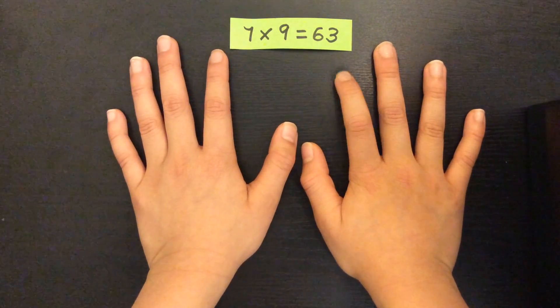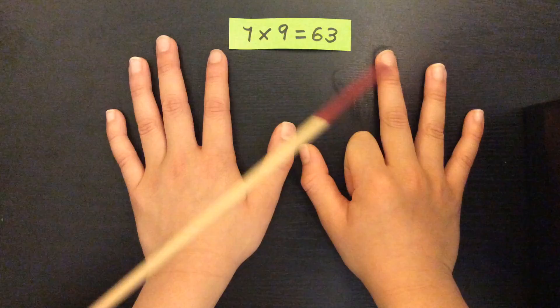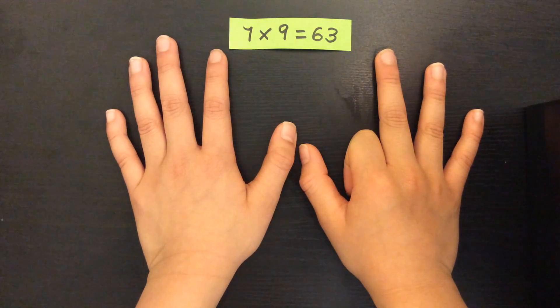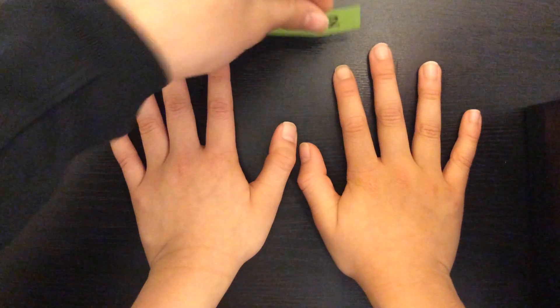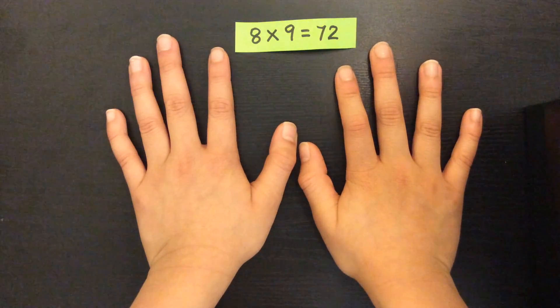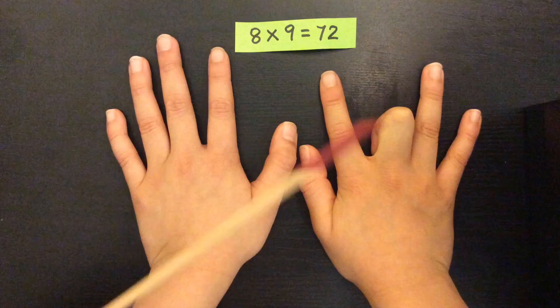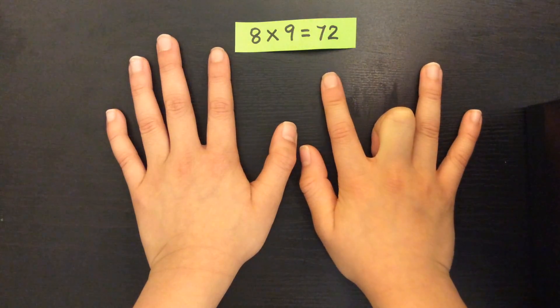Seven times nine. I have six and three. That's sixty-three. Eight times nine. I have seven and two. That's seventy-two.